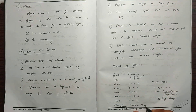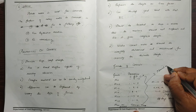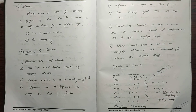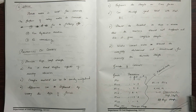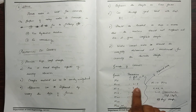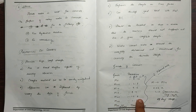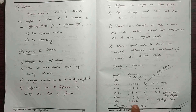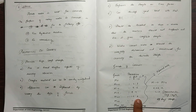Grades above M25 are classified as design mix, while M25 and below use nominal mix. The nominal mix ratios are: M5 is 1:5:10, M7.5 is 1:4:8, M10 is 1:3:6, M15 is 1:2:4, M20 is 1:1.5:3, and M25 is 1:1:2.